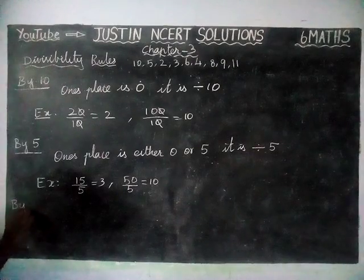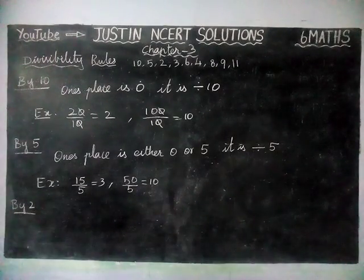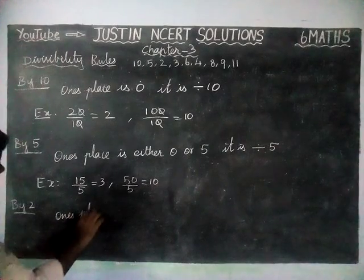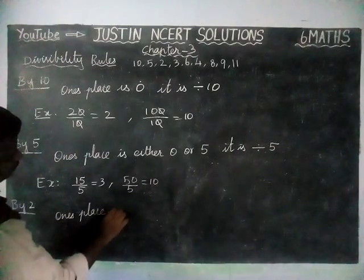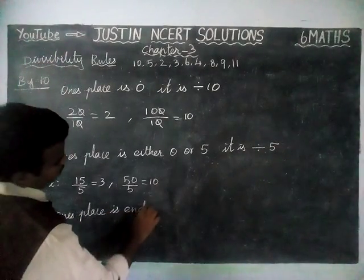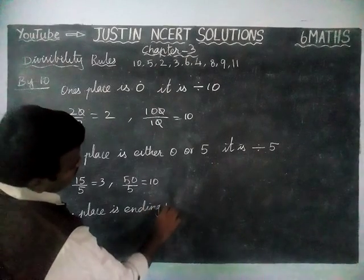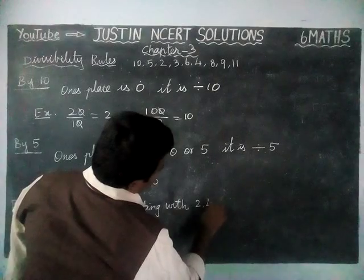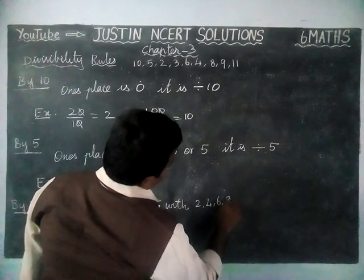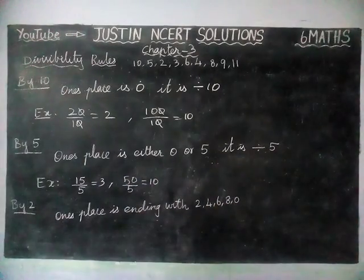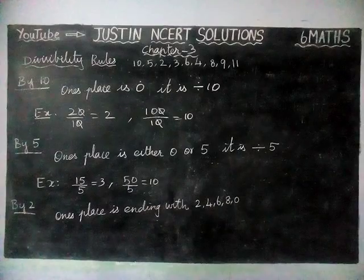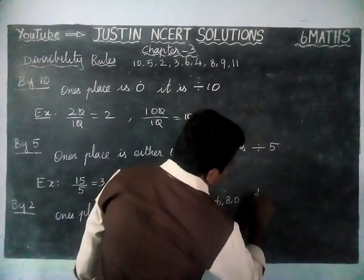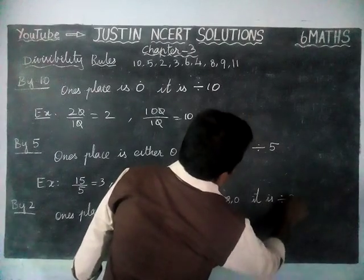Next, divisibility by 2. If the 1's place is ending with 2, 4, 6, 8, or 0, then it is divisible by 2.